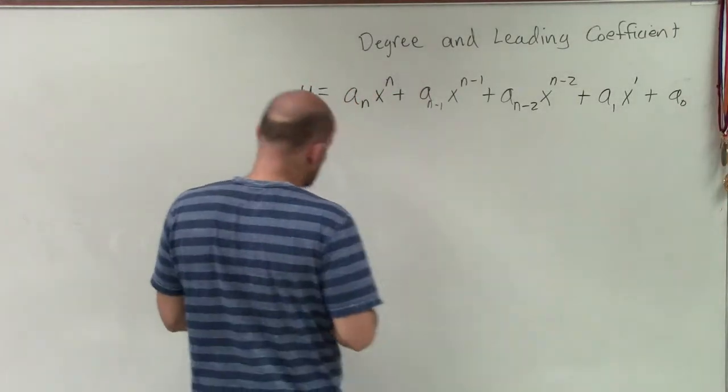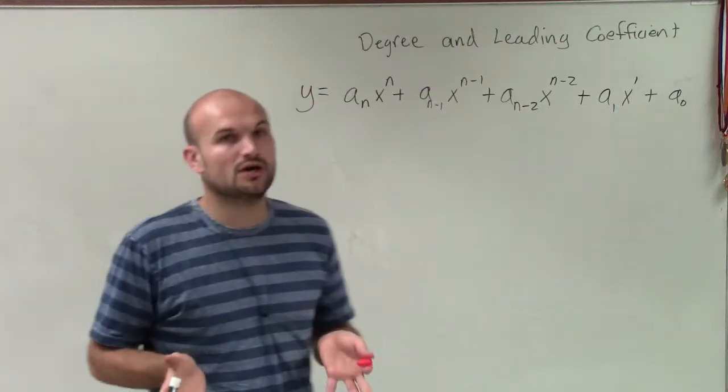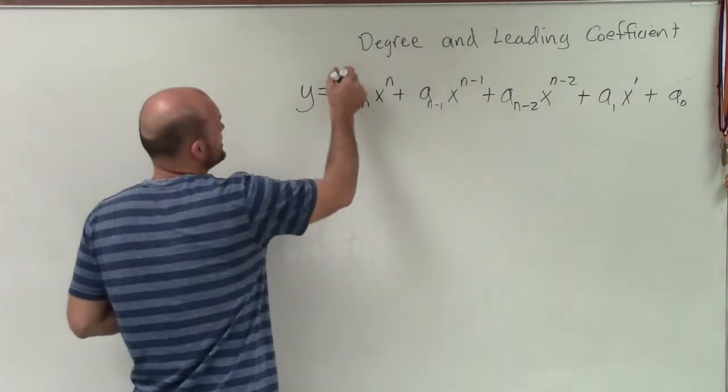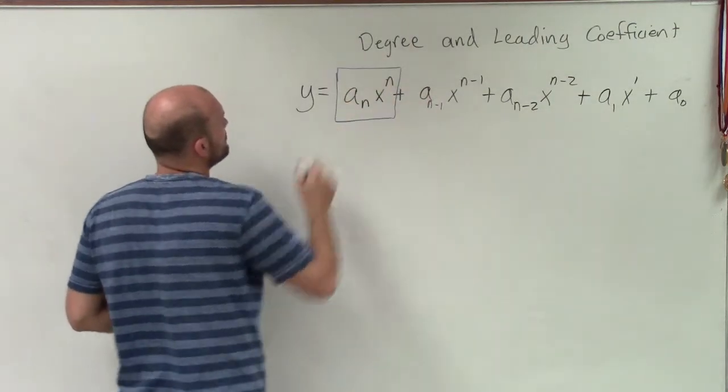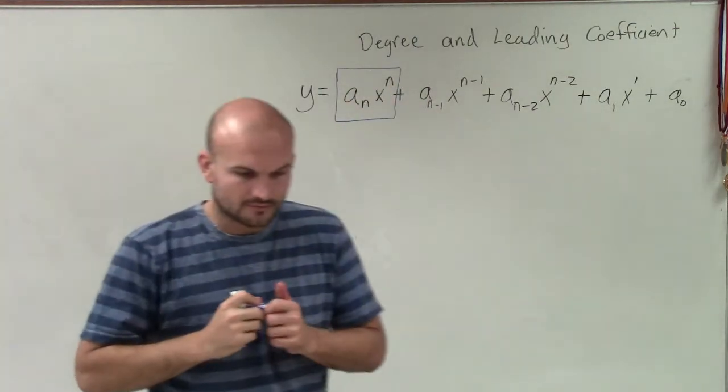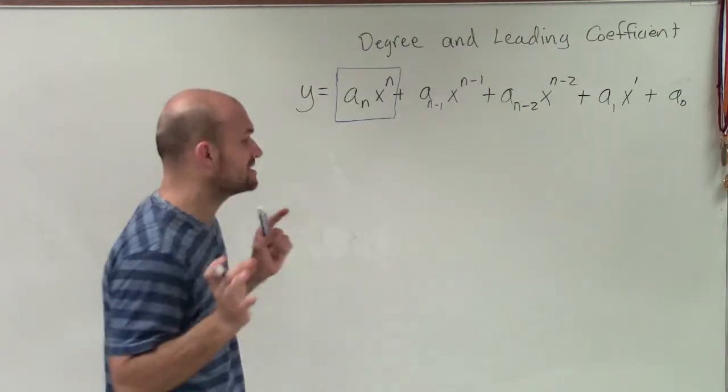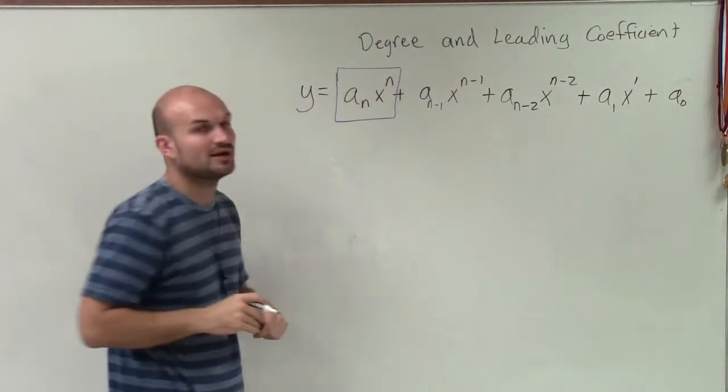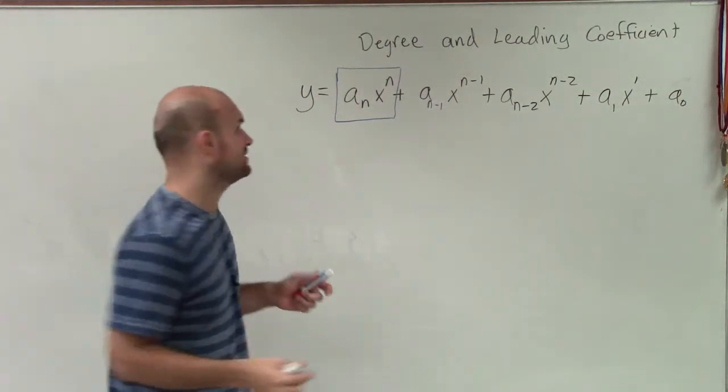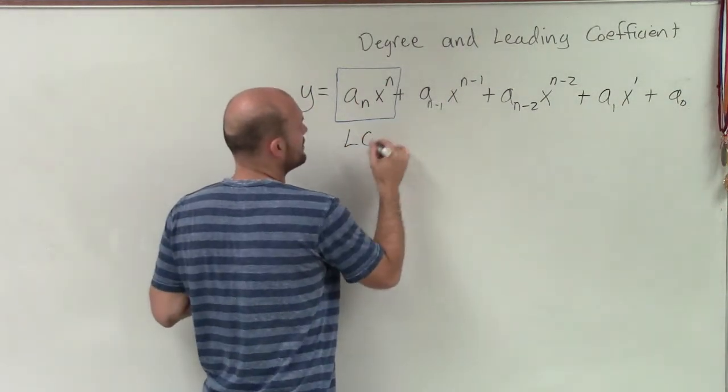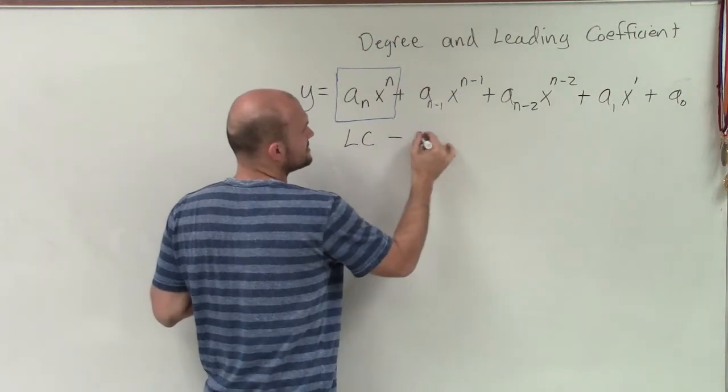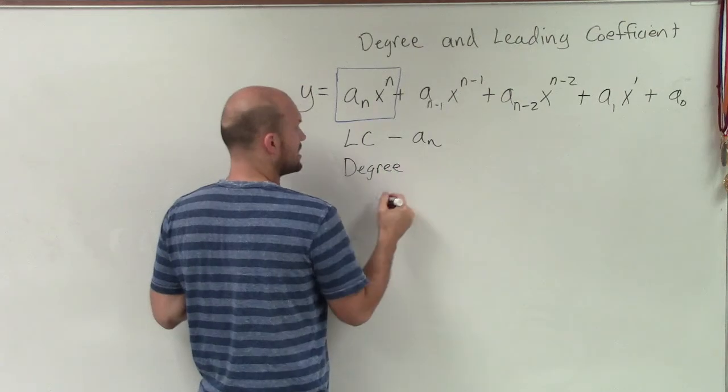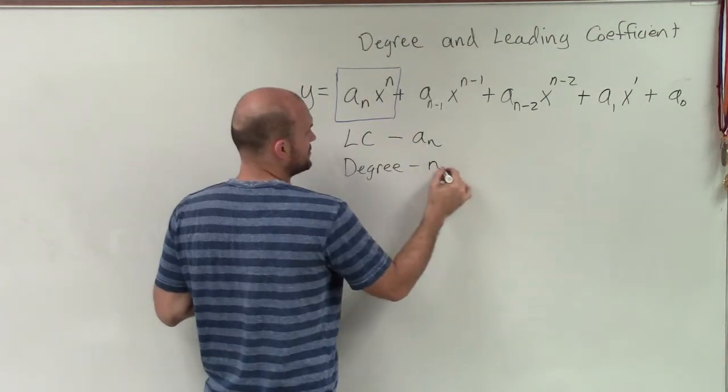However, we are only going to be concerned about when we're trying to determine the leading coefficient and the degree, the only thing that we are going to consider is our leading term. That's going to be our leading monomial of our polynomial. But it's going to be very important that we make sure that our exponents are in descending order so we can determine what the leading term is. Well, once we have the leading term, we know our leading coefficient, which I call the LC, is going to be a sub n, and then our degree of the polynomial is going to be our value n.